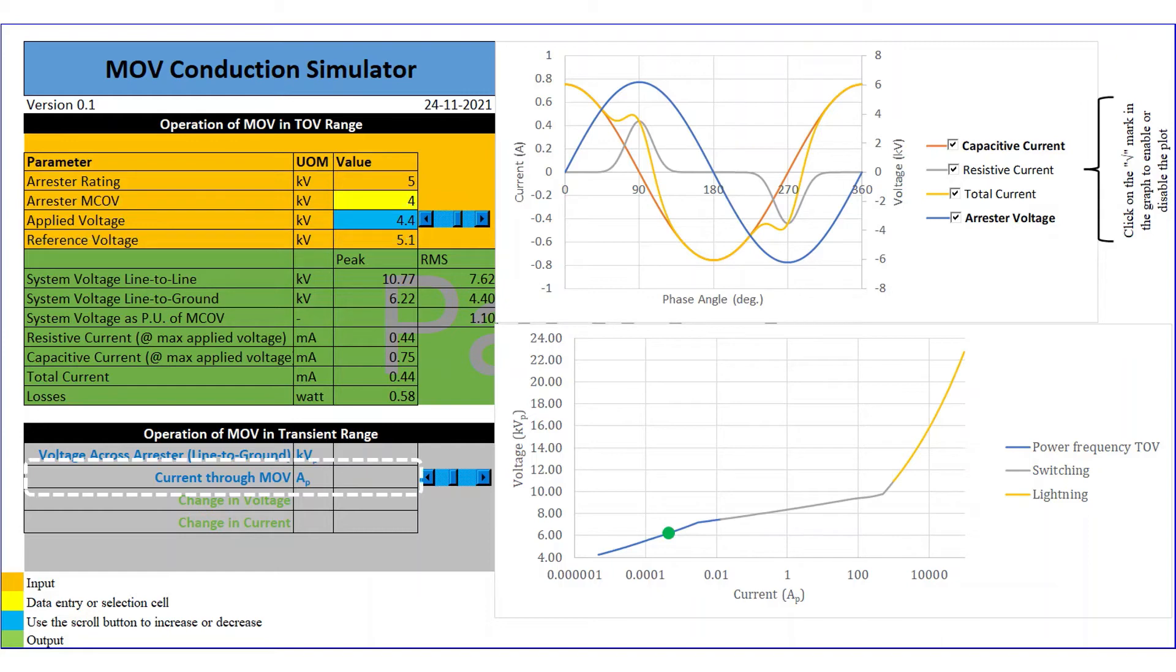The ToV range simulator starts from 3KV till 5.2KV of applied voltage. The transient range simulator starts from 1Apeak till 100kApeak. For the demonstration, we will vary it from 100Apeak till 100kApeak. The residual voltage is also shown in the display. There are two controls, one for the ToV range and other for the transient range.